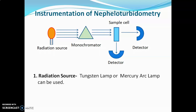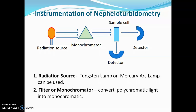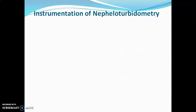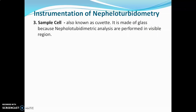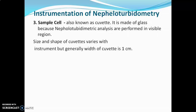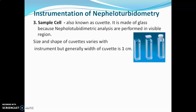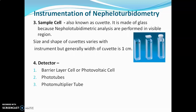The radiation source used is a tungsten lamp or mercury lamp. A monochromator and filter are used to convert polychromatic light into monochromatic light. The sample cell, also known as a cuvette, is made up of glass in nephelo-turbidometry because the analysis is performed in the visible region. The width of the cuvette is generally 1 cm. Detectors used are barrier layer cells, photovoltaic cells, phototubes, or photomultiplier tubes. These components are also explained in the instrumentation of UV-visible spectroscopy.